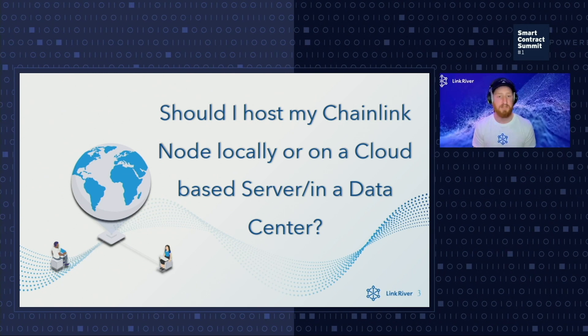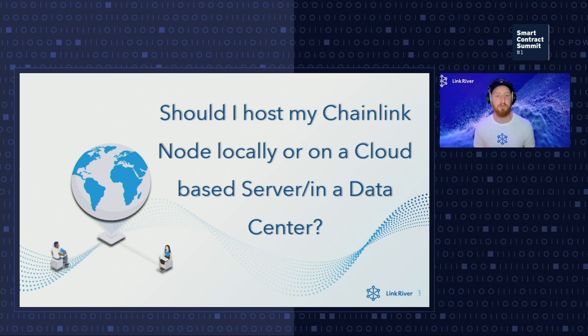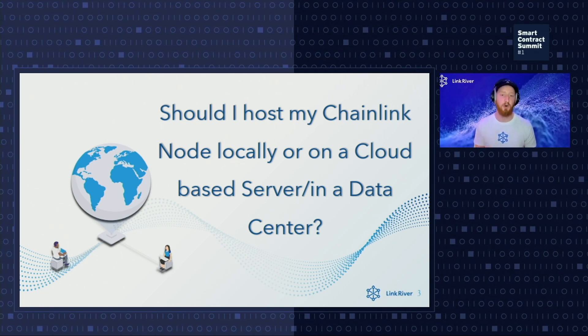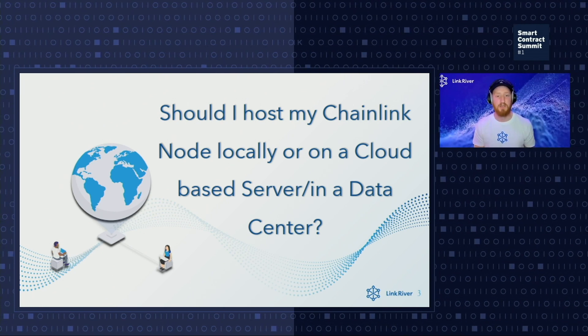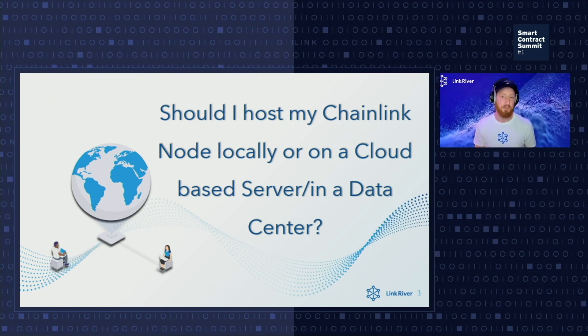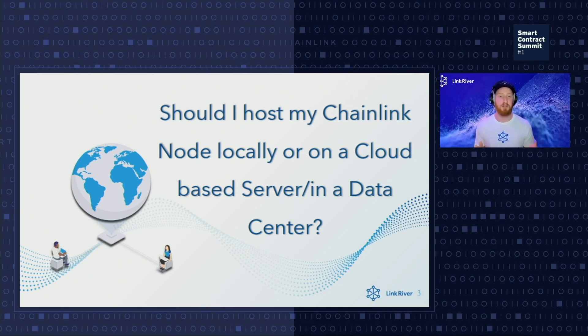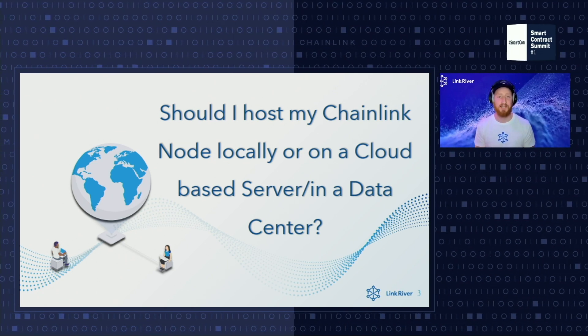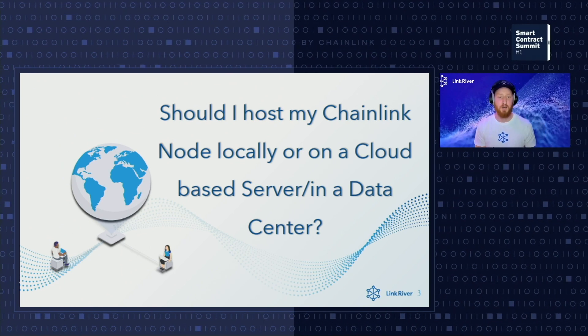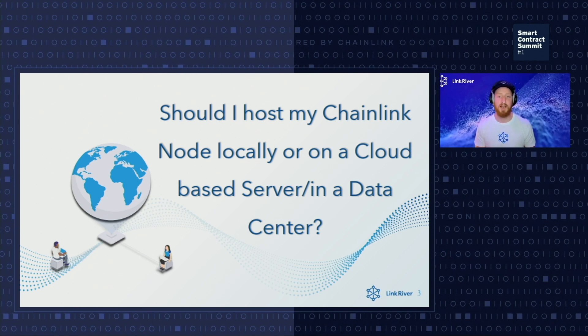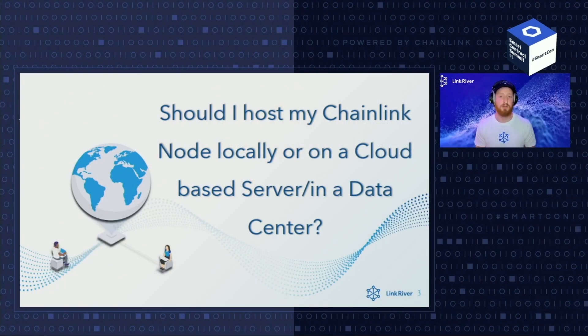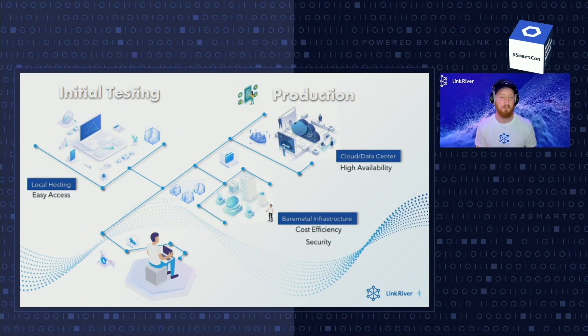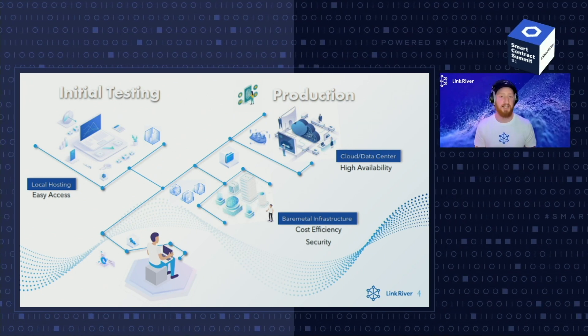Let us start with a couple of technical decisions node operators are confronted with. First: should I host my Chainlink node locally, on a cloud platform, or in a data center? For initial testing purposes, local hosting is sufficient — you can run your Chainlink node on your home computer, deploy a developer environment, and test various circumstances and on-chain interactions. For running a production node, we highly recommend a cloud or data center hosted infrastructure to ensure high availability, including regional failovers and managed services. You might also consider a bare metal infrastructure due to the potential performance and security improvements and cost efficiency, which is ideal for enterprise solutions.